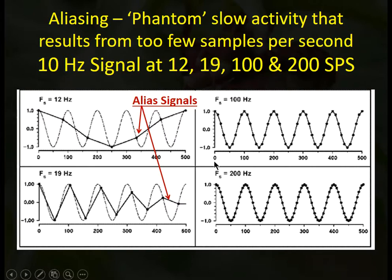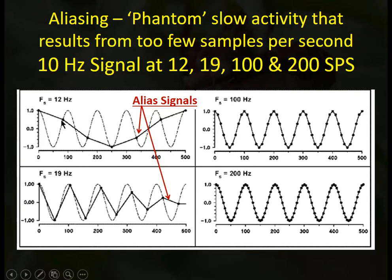If we don't sample fast enough, we get what's called an alias signal — aliasing. Sampling a 10 Hz signal at only 12 samples per second yields too few samples and we end up with a signal that looks much slower than the real waveform — that's an alias signal. Sampling at 19 times per second is still below the required 20, so we still end up getting off and under-representing the waveform and producing an alias signal.